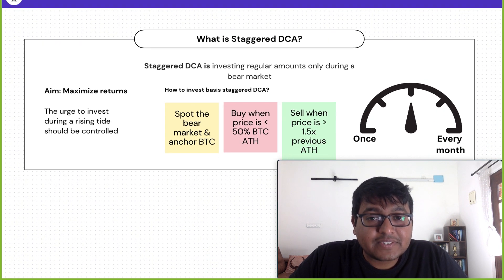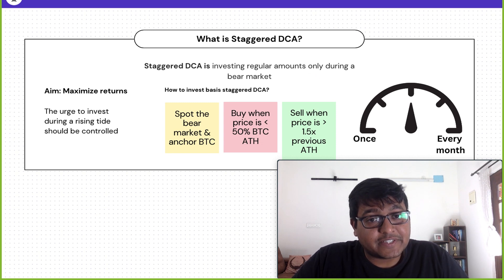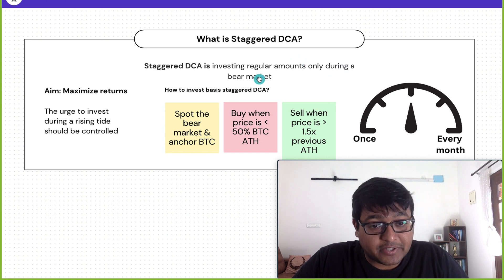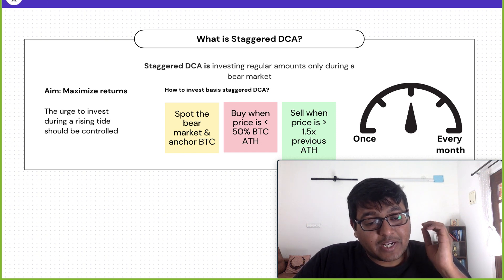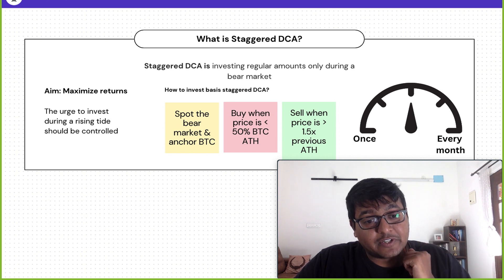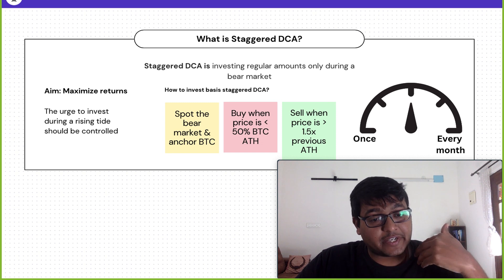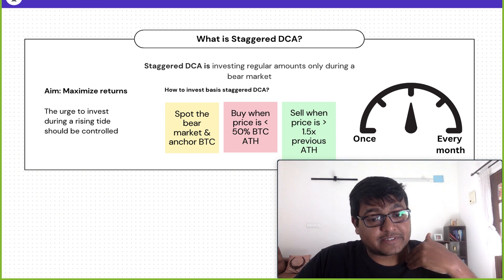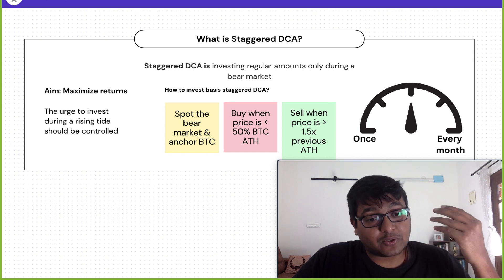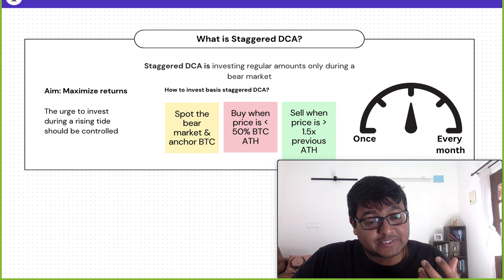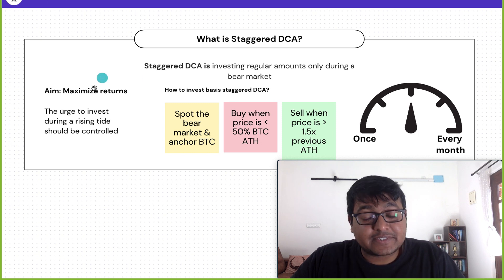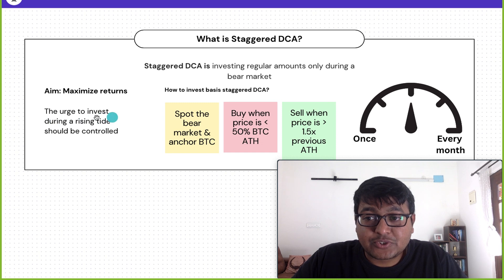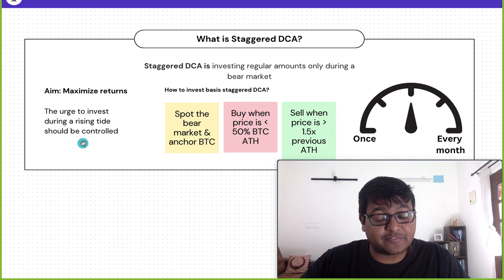So what is staggered DCA? Staggered DCA is investing regular amounts only during a bear market — as simple as that. You don't invest at all times. As simple as it may sound, this is very difficult because people have no control over their money. It's very difficult to tell yourself not to invest, especially when you read a news article saying this crypto went up 5x since yesterday or this crypto is up 1000% this year. It's very difficult to resist that temptation, but that's where people really fail and their returns are diminished.